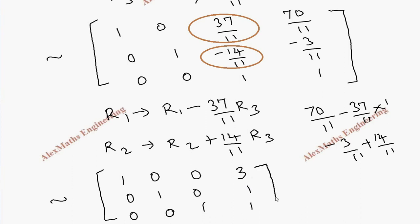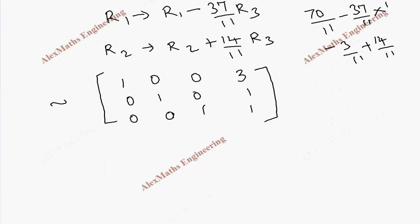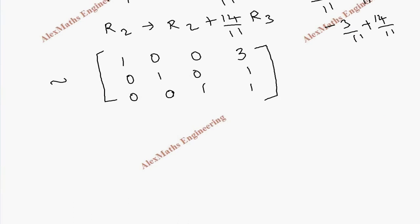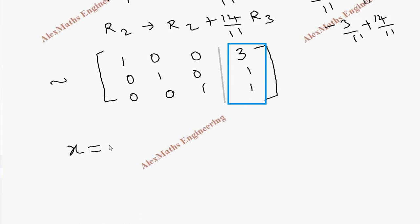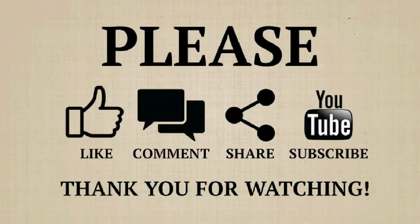We have now converted the augmented matrix completely into diagonal form. We can write the solution directly: x = 3, y = 1, and z = 1. Thank you.